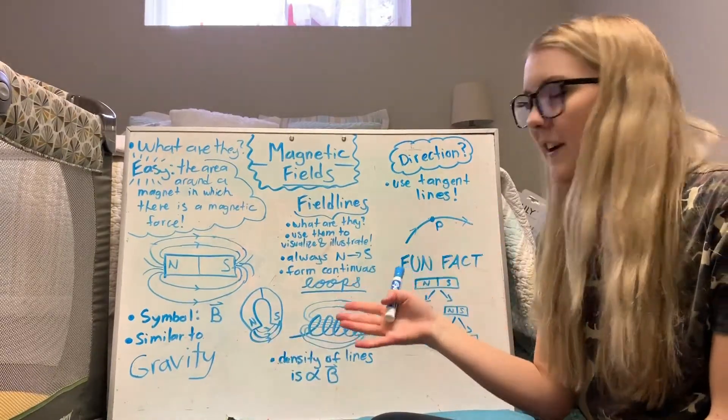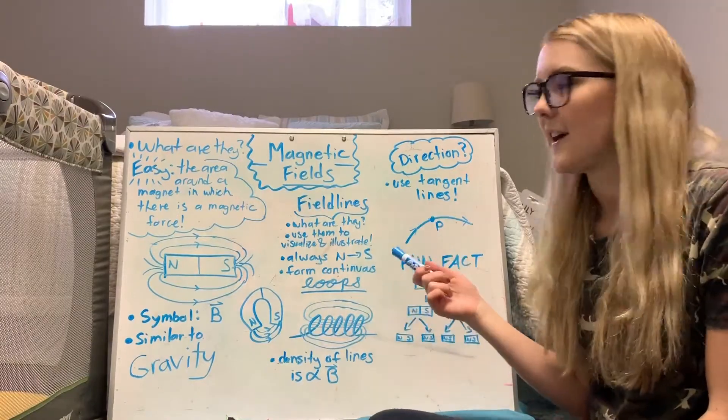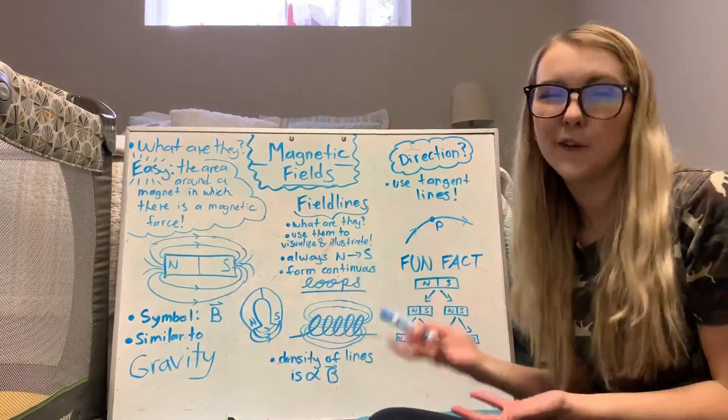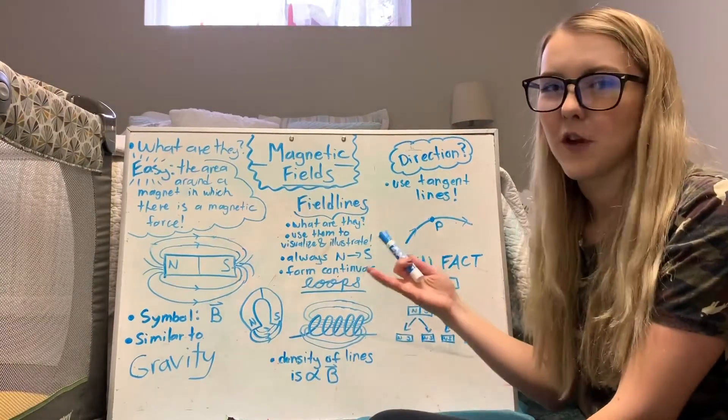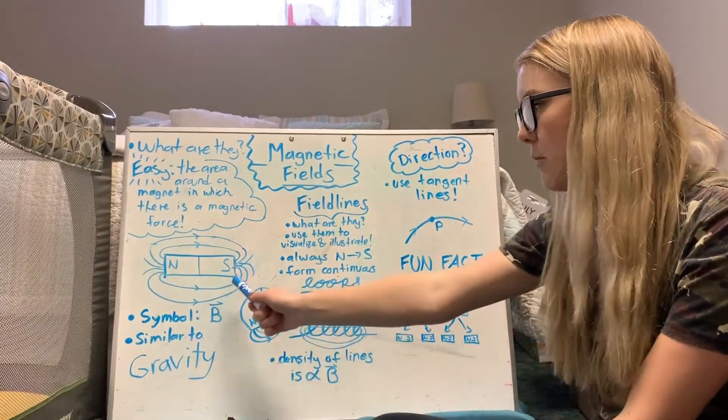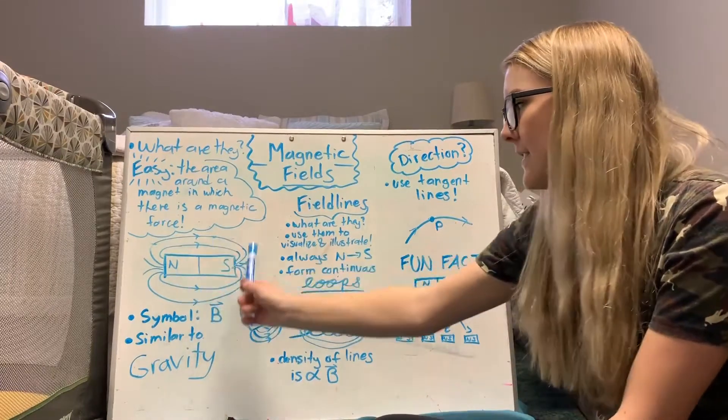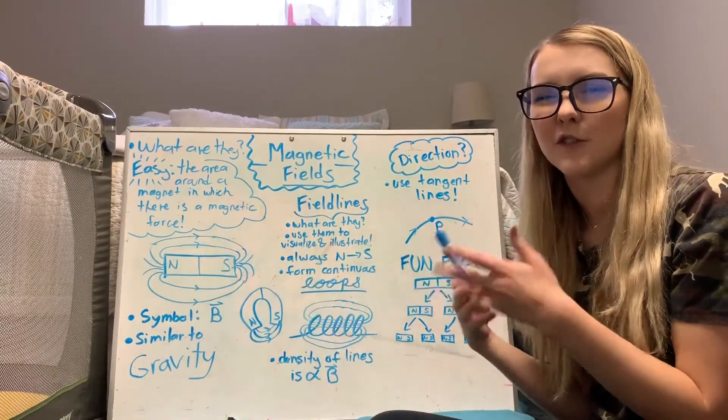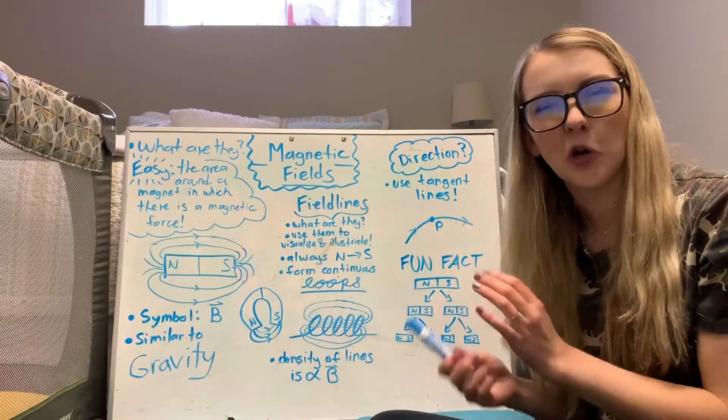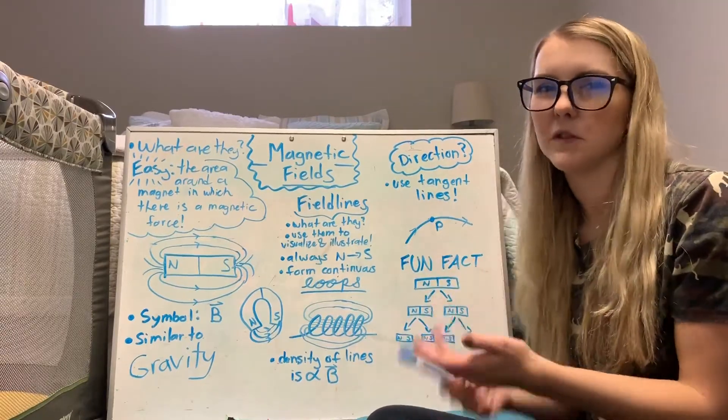So that's what magnetic fields are and now I'm going to introduce field lines. So once again, what are field lines exactly? Well it's just the way that we visualize and illustrate a magnetic field. So I drew this bar magnet over here, these lines, magnetic field lines, that's just how we show the field so that we can understand what's going on and it's basically just a drawing of a field because they are invisible so it makes it easier.